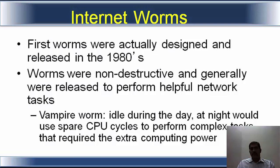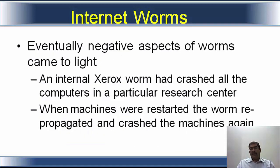The first worms were actually designed and released in the 1980s. Worms were non-destructive and generally released to perform helpful network tasks. For example, the vampire worm remained idle during the day; at night it would use spare CPU cycles to perform complex tasks that required extra computing power. These worms were also used as automatic scheduled light-out operations for taking system backups when CPU cycles were idle. But ultimately, over a period of time, the negative aspects of the worm came to light. An internal Xerox worm crashed all computers in a particular research center. When machines were restarted, the worm re-propagated and crashed the machines again.